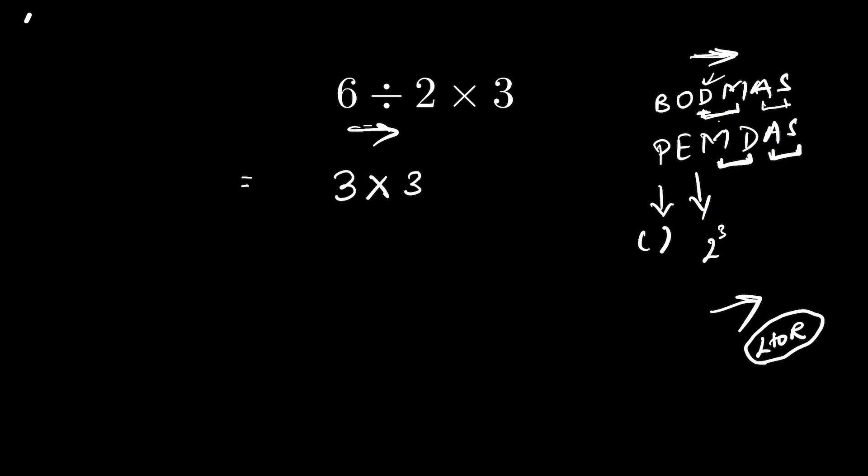If you just follow the letters of PEMDAS, then you will multiply these two. 2 times 3 is 6, and then 6 divided by 6 will be 1. So that is not the correct answer.